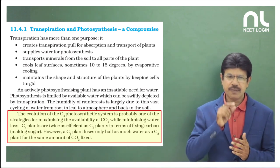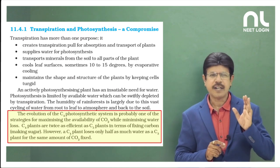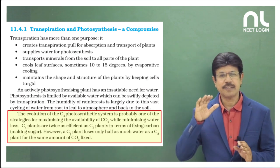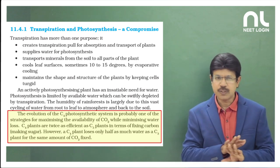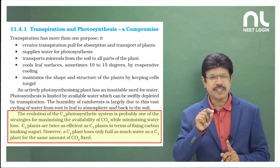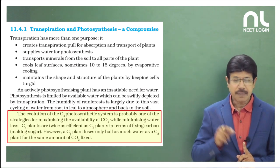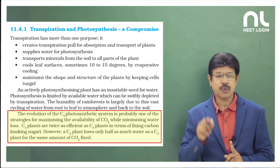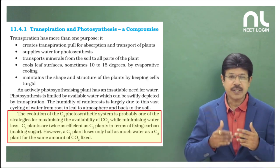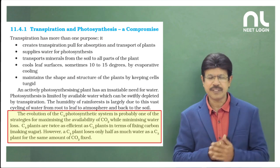For carbon dioxide fixation, suppose 100 ml of water is utilized in a C3 plant. The same 100 ml of water is utilized in a C4 plant — there is no difference. But C3 plants lose 1000 ml of water in transpiration, whereas C4 plants lose only 500 ml of water. So, water usage efficiency is high in the case of C4 when compared to C3.